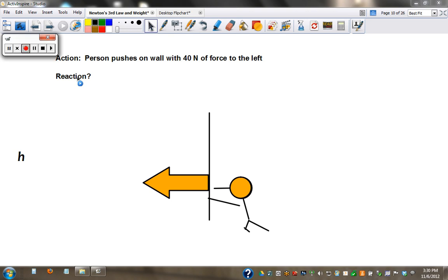If you're not sure what to put, lesson 19 is for you. The answer is the wall pushes back on the person with 40 newtons of force to the right. So you need the direction, the value, and the description. Person pushes on wall, reaction: wall pushes on person.